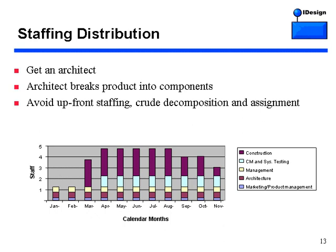Let's look at staffing distribution — how do you distribute your staff and firepower over the duration of the project? The team should be comprised of a core team — a project manager, a product manager, and an architect — plus developers and QA resources. The core team stays throughout the lifespan of the project. This is from an actual project I managed a few years ago. The manager, product manager, and architect were all on board on day one.